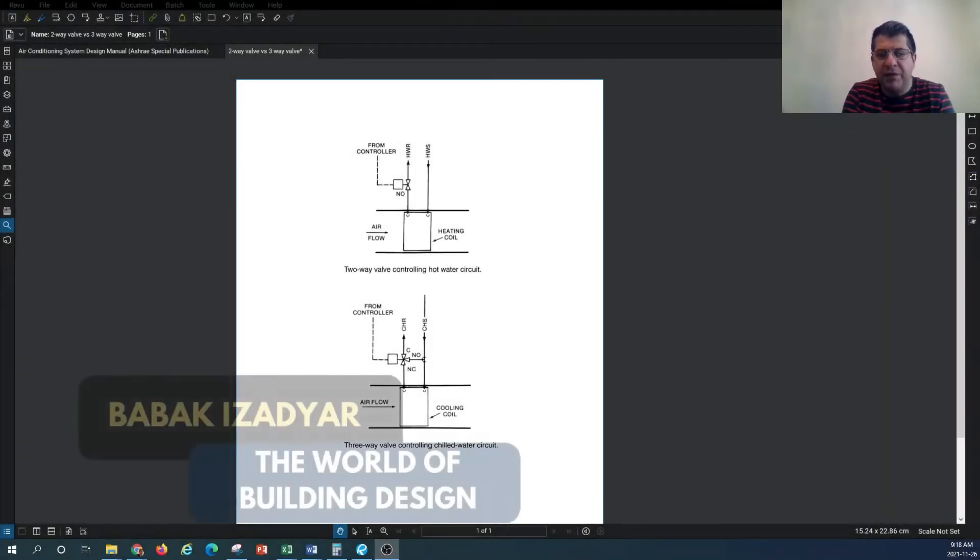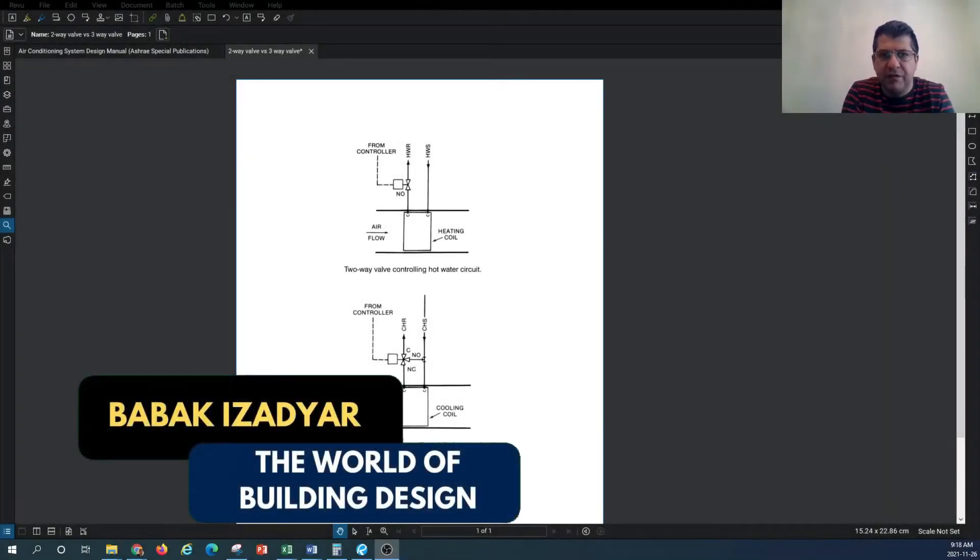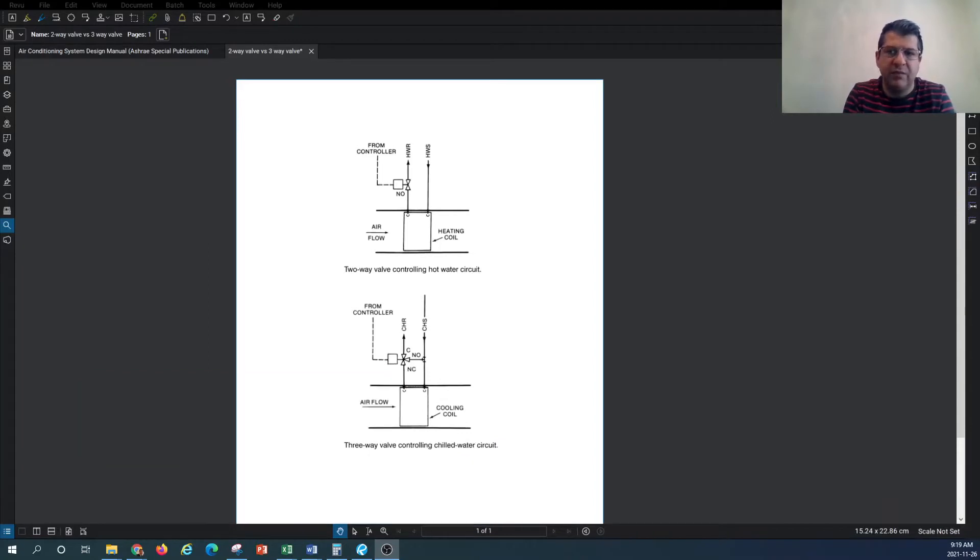Hello and welcome back to another episode of HVAC system design with the channel World of Building Design. In this tutorial, we want to look at the way that hydronic systems are controlled, specifically in the coil where you have the airstream in the ductwork and you have a hydronic coil. What are the types of control systems commonly used in the HVAC industry?